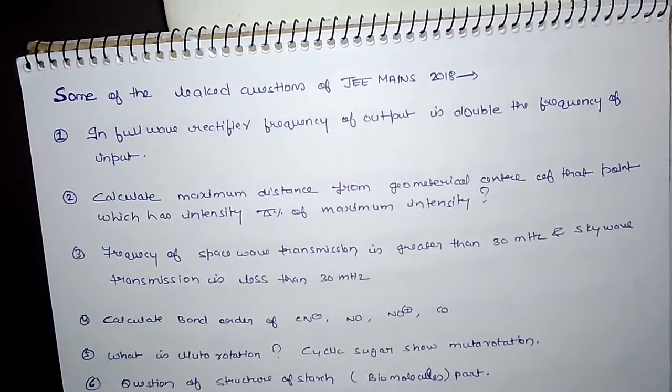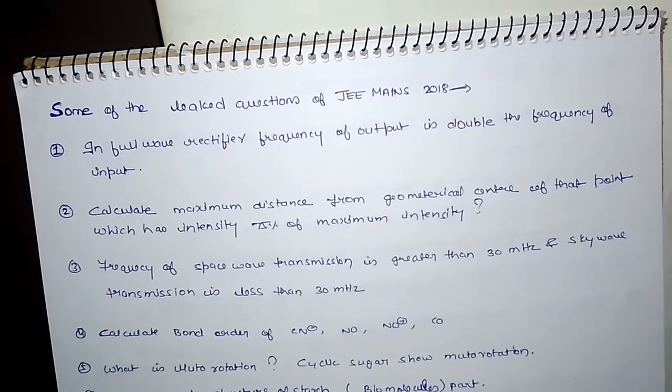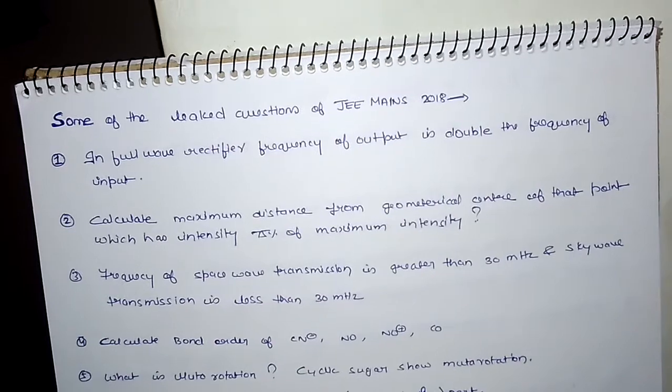Frequency of space wave transmission is greater than 30 megahertz and sky wave transmission is less than 30 megahertz.